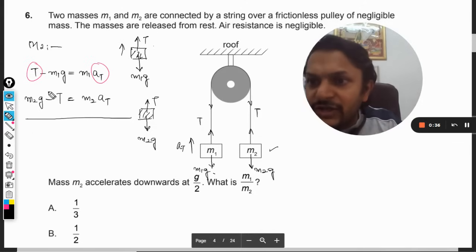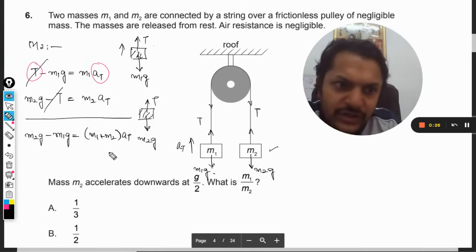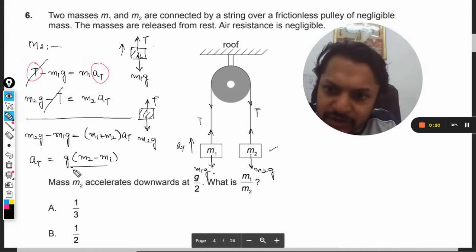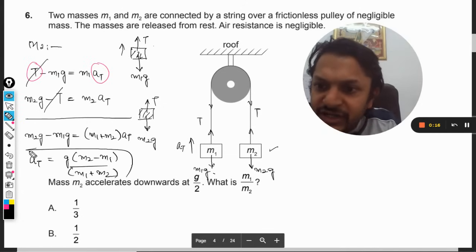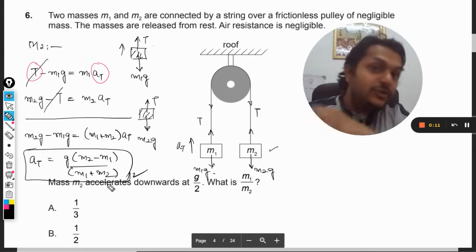How? We will add these two equations. This T will get cancelled, so it will become (m1 plus m2) into a. So a will become g times (m2 minus m1) divided by (m1 plus m2). My dear students, we have reached the same conclusion, the same formula which you can even remember and apply here to get the answer.